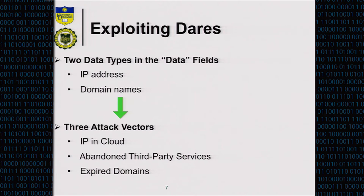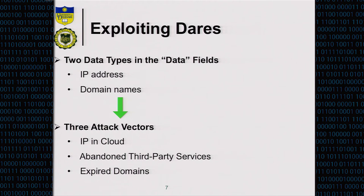We found three different attack vectors. The first is IP in cloud: cloud services provide a shared pool of public IP addresses, and before cloud, it was very hard to obtain an IP address owned by someone else. But cloud services allow anyone to get a public IP address. If someone used it before and released it, you can obtain that exact same public IP address later.